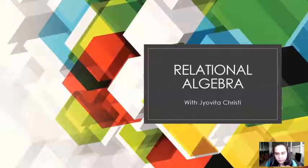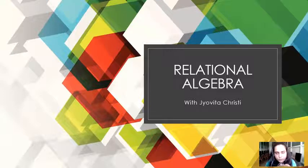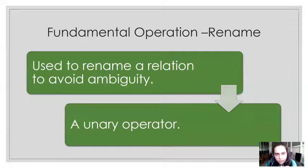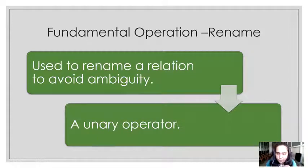Hello and welcome to database management system. I'm Javita Christy and in this video I'm going to teach you a fundamental operation called rename operation in relational algebra. Rename operation is used to rename a relationship to avoid ambiguity. Ambiguity is caused when you give confusing instructions within your programming language. This confusion can be avoided using the rename operation. It's also a unary operation, so you only need to provide one relation for it to work.